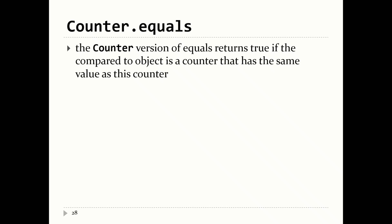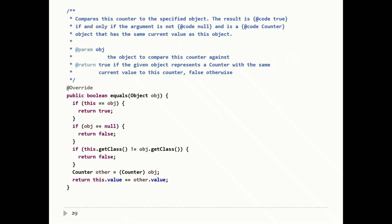Let's do the same thing for Counter. Counter just has one field: its type is int and it's called value. Two counters are equal if they have the same value. Step one: test if the two objects are the same object — if so, return true. Step two: test if the incoming object is null — if so, return false. Step three: compare the two classes — if different, return false. Step four: cast. Step five: compare the fields. In this case our field is primitive, so we can just return this.value == other.value. If the values are different we get false; if the same we get true. On a quiz or exam you have to memorize these steps — they're not difficult, but you have to commit them.